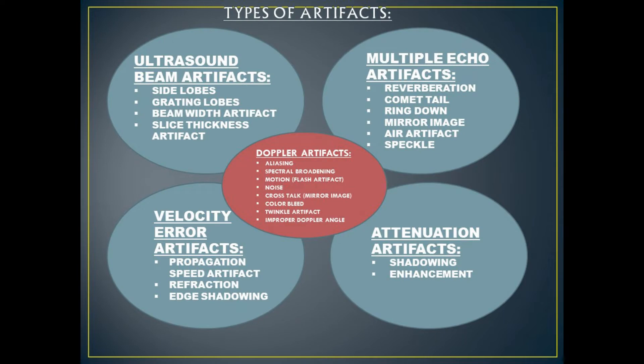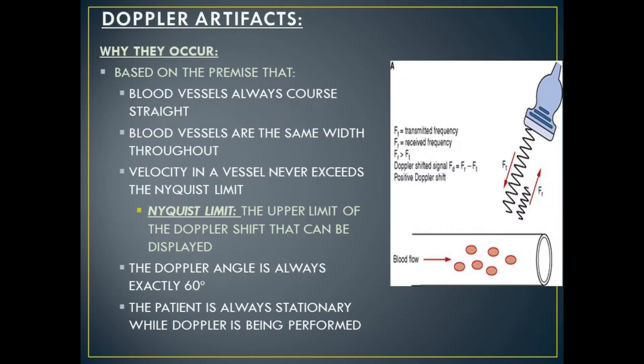There are five categories of ultrasound artifacts that can occur: ultrasound beam artifacts, multiple echo artifacts, velocity error artifacts, attenuation artifacts, and Doppler artifacts. One category of ultrasound artifacts are known as Doppler artifacts — these are artifacts that occur when using color, power, or spectral Doppler.